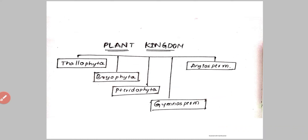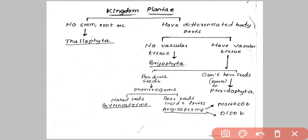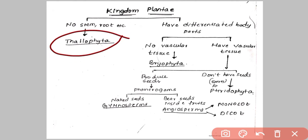To classify the plant kingdom into these five divisions, let us follow a systematic and structural approach. The first level of classification depends on whether it produces differentiated body parts like stem, root, and leaf. If there is no presence of stem, root, and leaf, then that will come under the division Thallophyta.